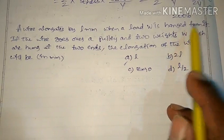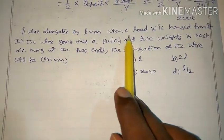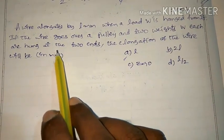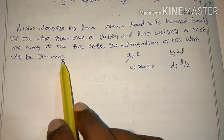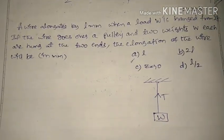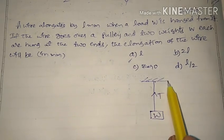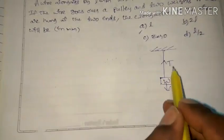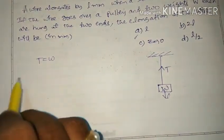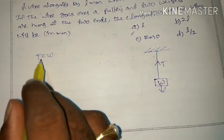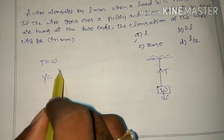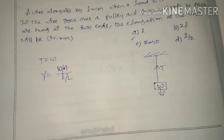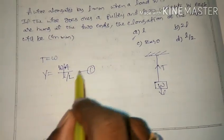The question asked in 2006: a wire elongates by l millimeter when a load W is hung from it. If the wire goes over a pulley and two weights W each are hung at the two ends, the elongation of the wire will be — in the first case, the wire is hung to a fixed end with tension T acting upward and weight W downward. At equilibrium T = W, so Young's modulus: Y = (W/A) / (Δl/L).